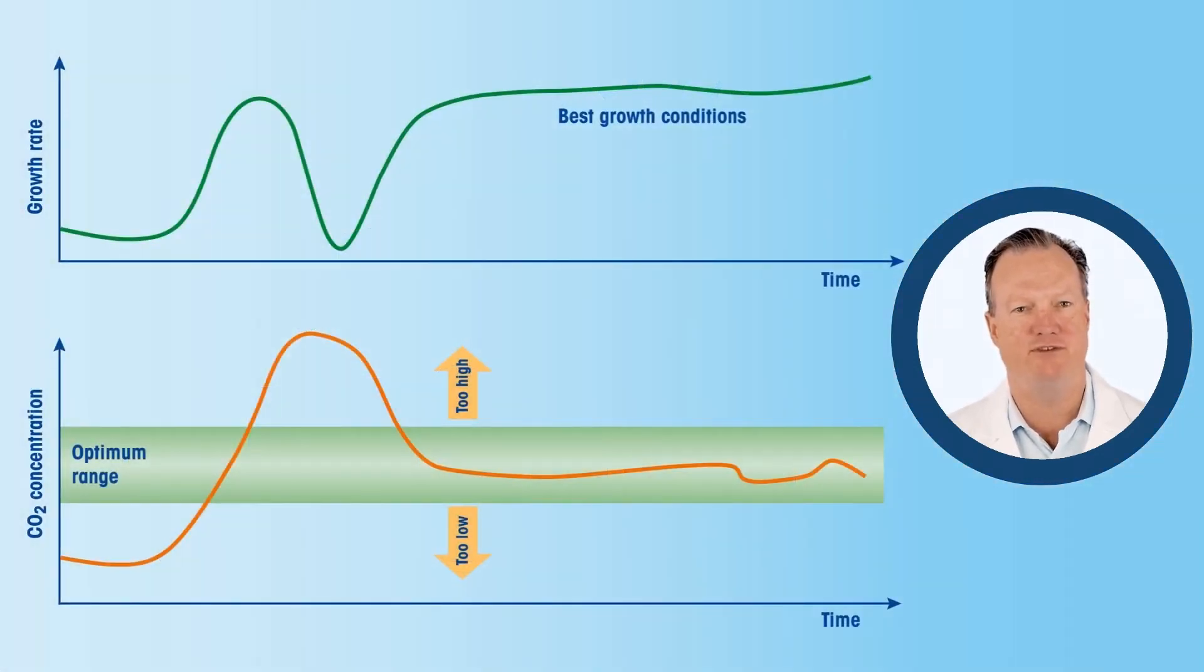The most important advantage of continuous inline monitoring, beyond those mentioned, is the possibility to control dissolved CO2 concentration within defined limit values and to generate alarms when those values are exceeded.